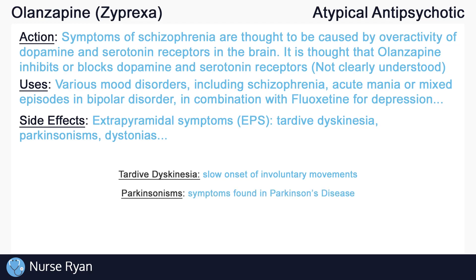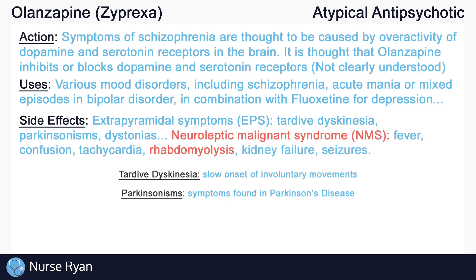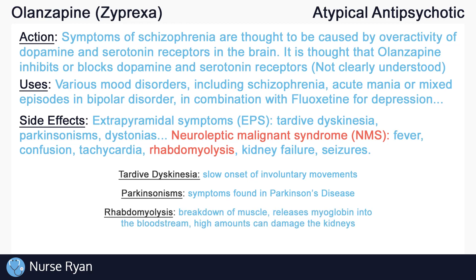Parkinsonisms, which are the symptoms found in Parkinson's disease like tremors and rigidity, and other dystonias. Olanzapine can also cause a rare but life-threatening reaction called neuroleptic malignant syndrome, or NMS, which presents as high fever, confusion, tachycardia, muscle rigidity, and can lead to further complications like rhabdomyolysis, kidney failure, and seizures.